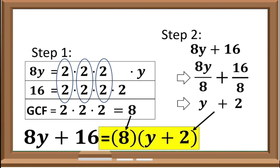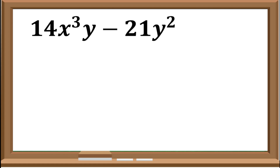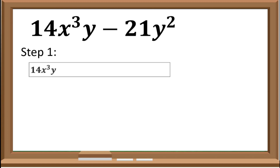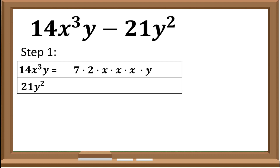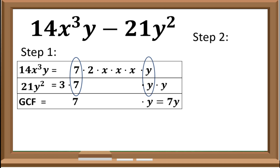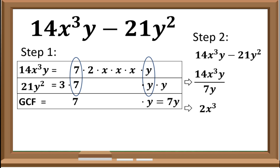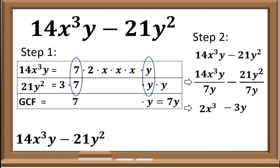Let us try this example: 14x cubed y minus 21y squared. For step 1, for 14x cubed y, we have 7 times 2 times x times x times x times y. For 21y squared, we have 3 times 7 times y times y. The common factors are 7 and y, so the GCF is 7y. Step 2: 14x cubed y divided by 7y is 2x cubed, and negative 21y squared divided by 7y is negative 3y. Step 3: the factors of 14x cubed y minus 21y squared are 7y and (2x cubed minus 3y).